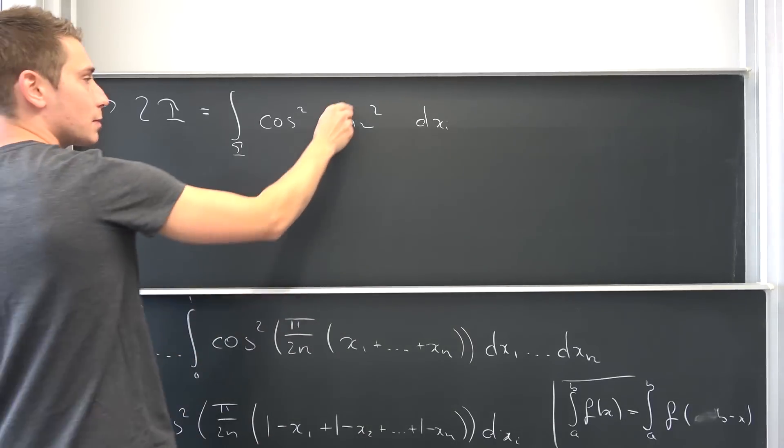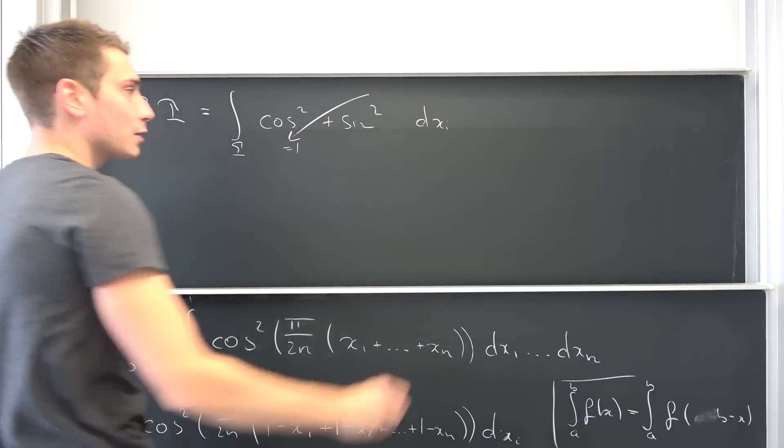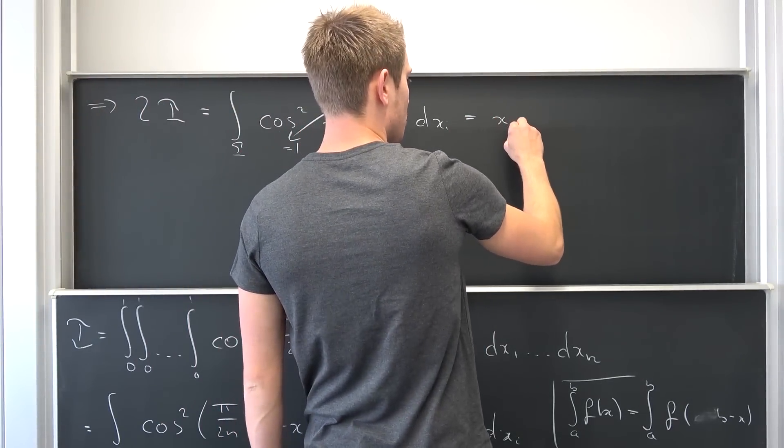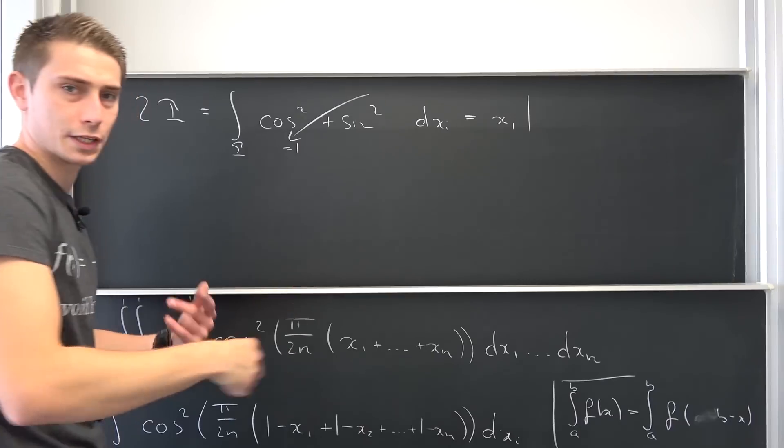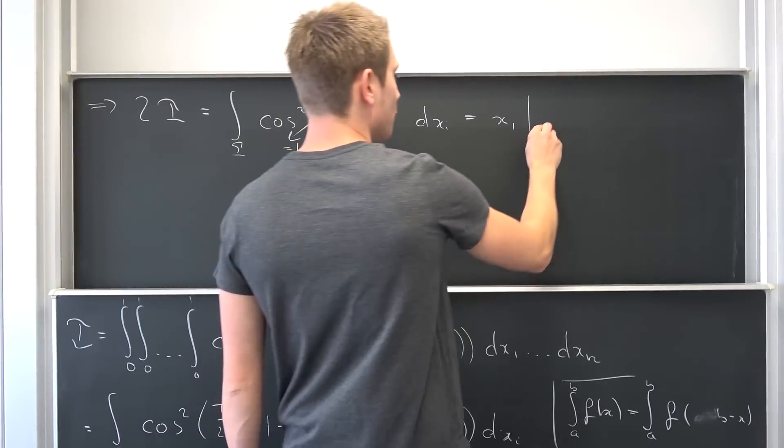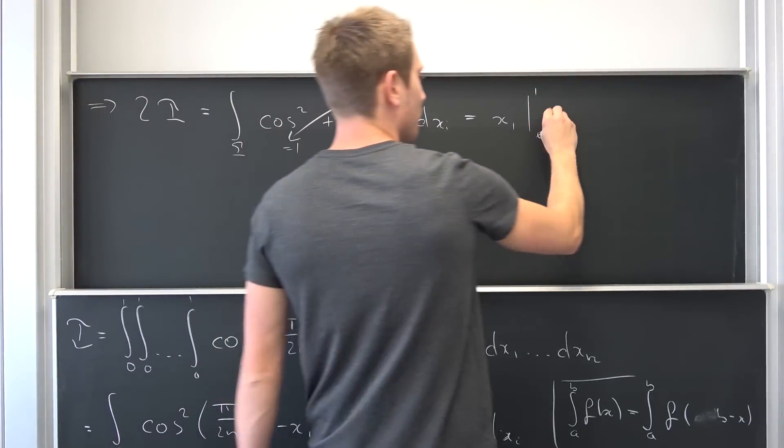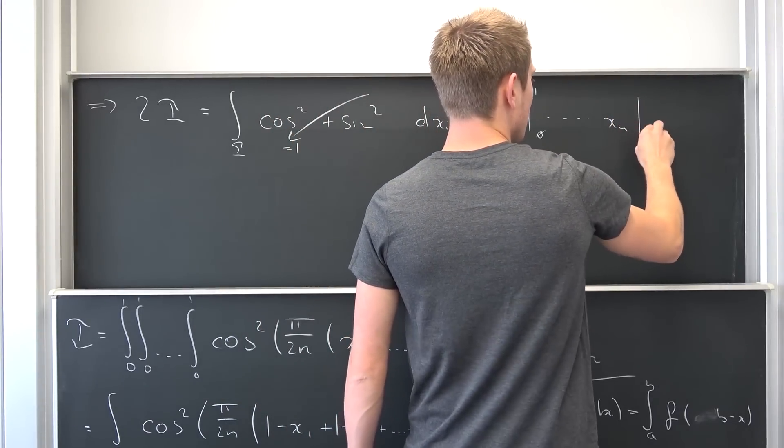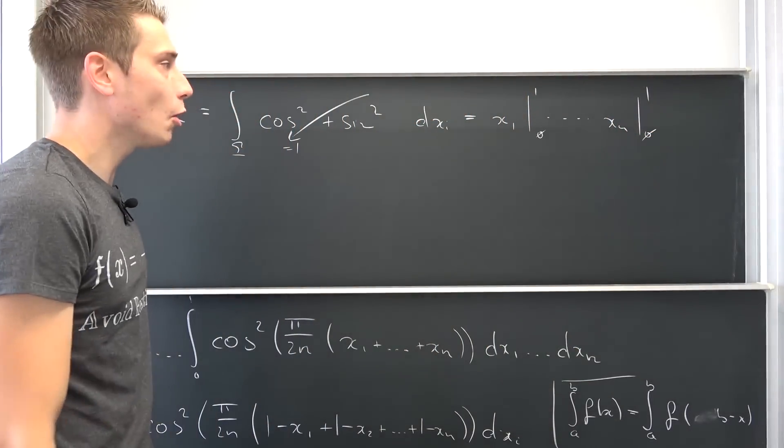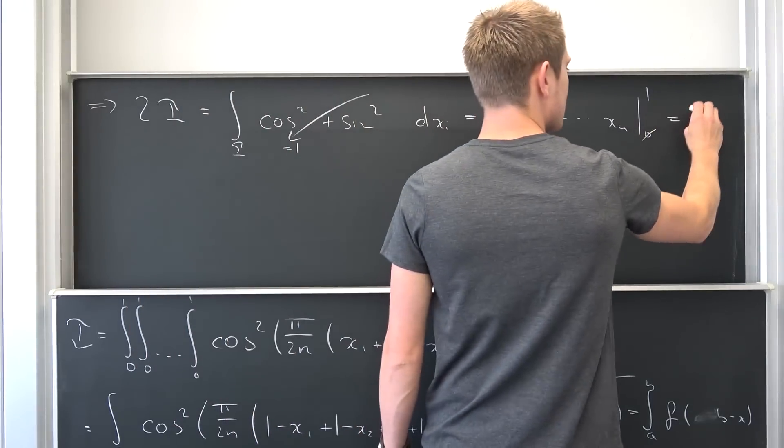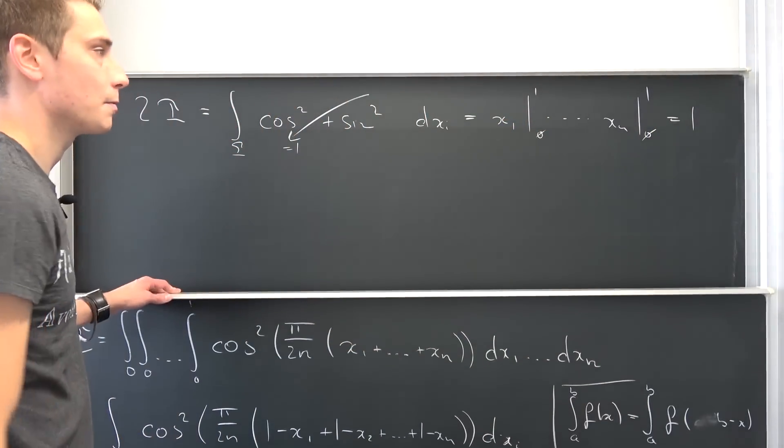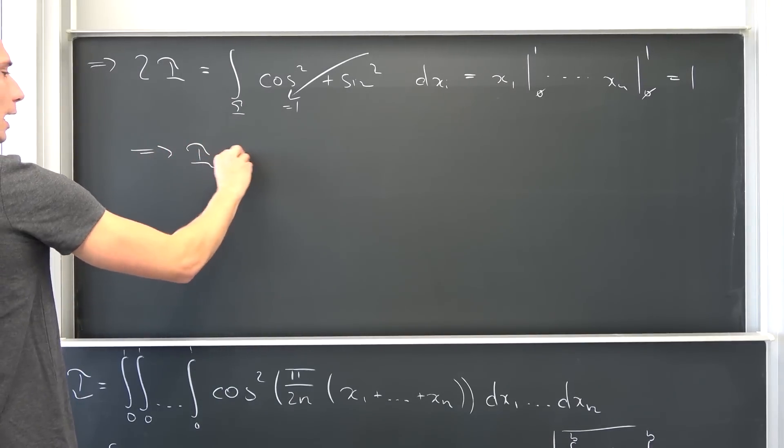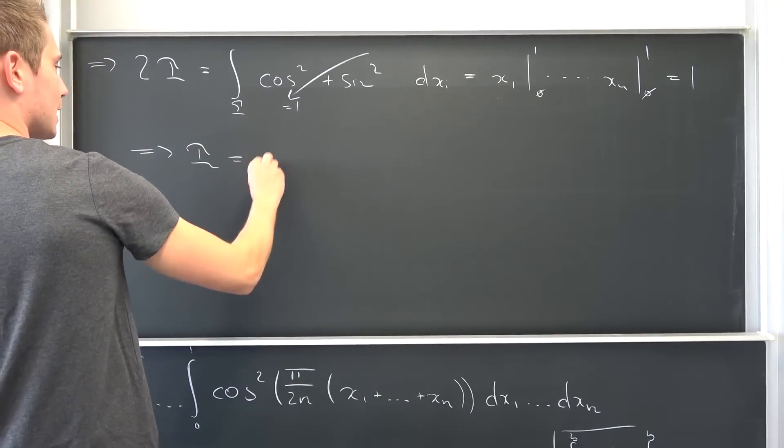Gamma cosine squared of all of this shit plus sine squared of all of the same crap. Meaning sine squared plus cosine squared is nothing other than 1. Meaning we are going to end up with the integral of 1. So if we integrate 1 it's going to be x. So x1 from 0 to 1 is going to result in 1. Multiply together n times up until xn from 0 to 1 which is going to be 1 yet again. So overall this chunk right here is going to be 1 in the limit.